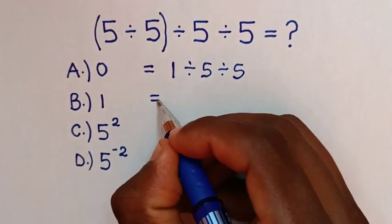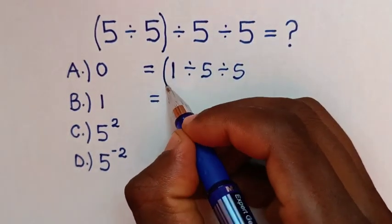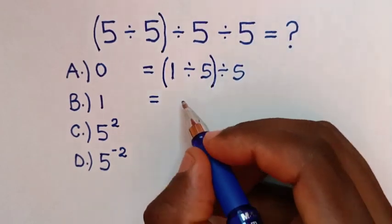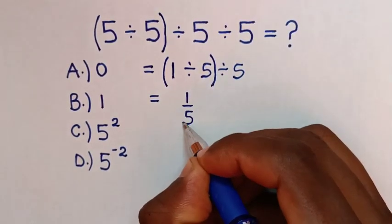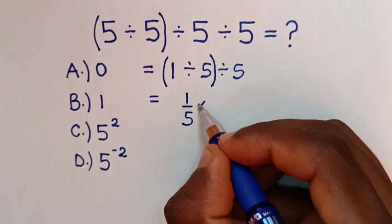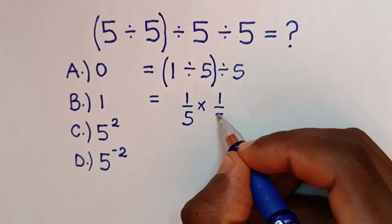Then it will be equal to, we will deal with this first division. 1 divided by 5, which is the same as 1 over 5, then divide by 5 is the same as times 1 over 5.